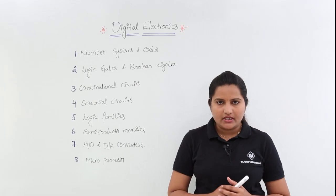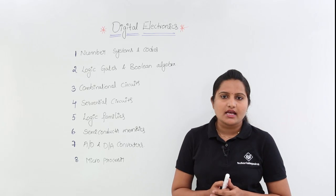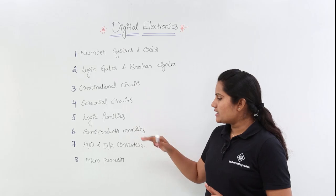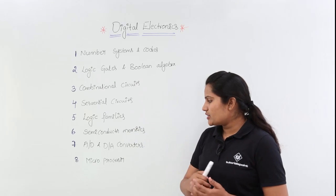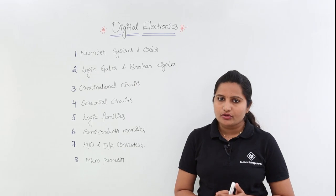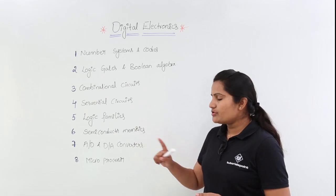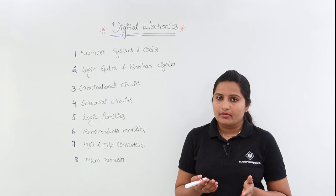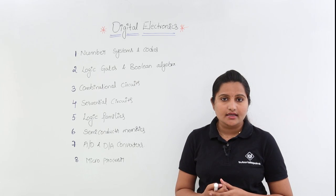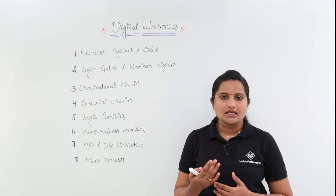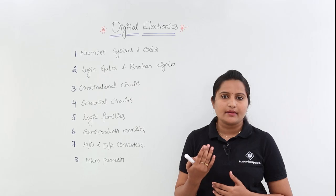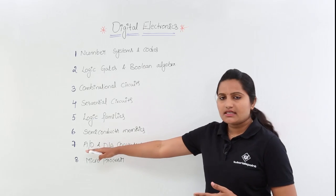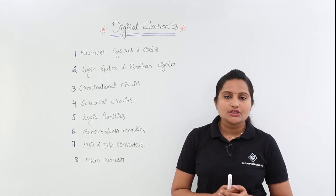Coming to semiconductor memories, we are going to discuss RAM, ROM, EPROM, flash memory and related types. For A-to-D and D-to-A converters — a very important topic for technical exams — we will cover analog-to-digital and digital-to-analog converters. Under DAC: binary weighted resistor DAC and R-2R ladder DAC. Under ADC: counter type, successive approximation, flash or parallel type, dual or integrating type, and sigma-delta ADC.